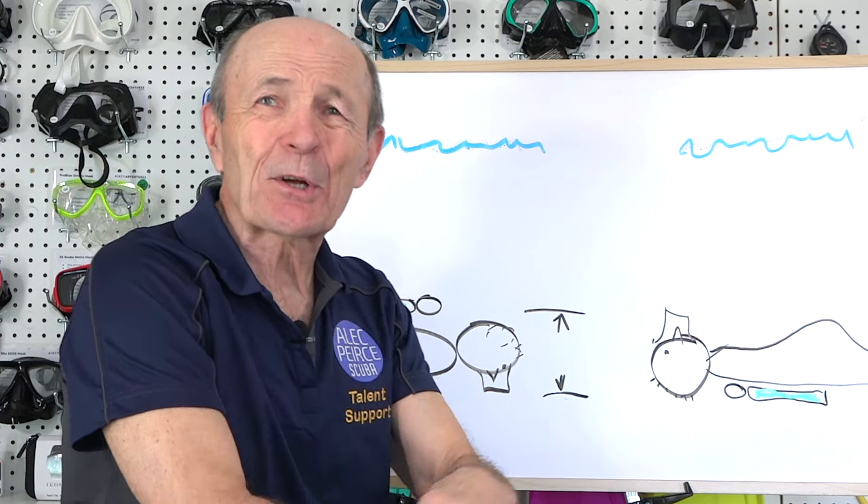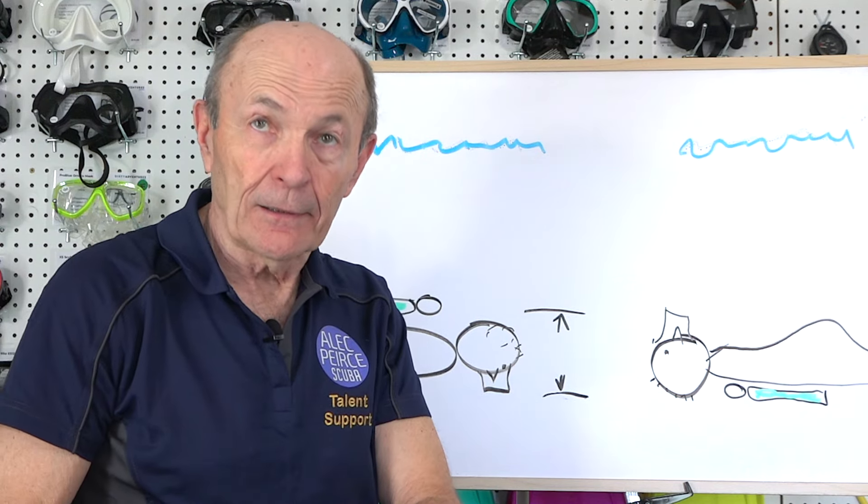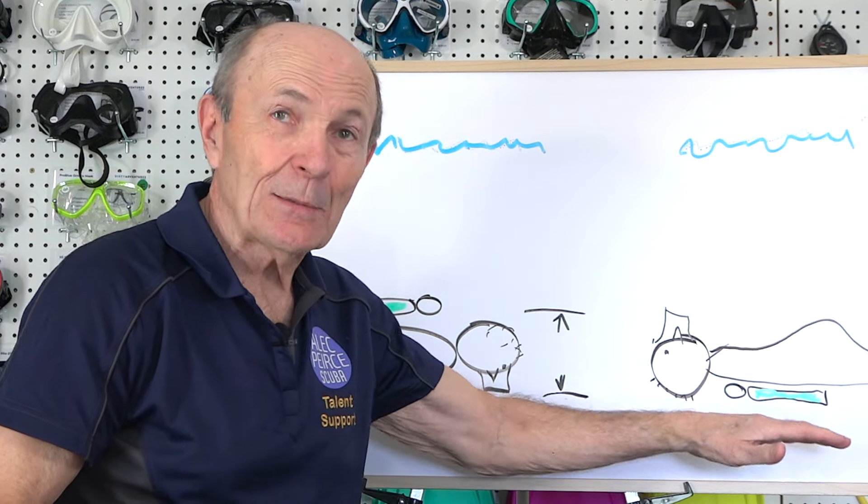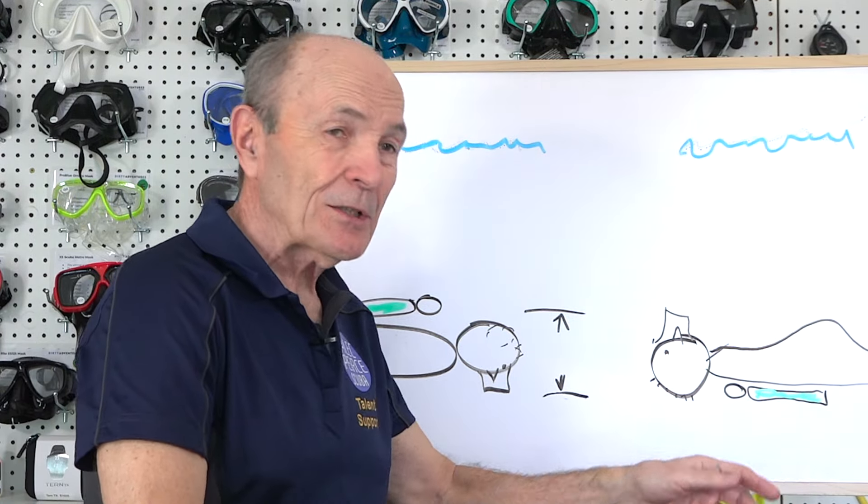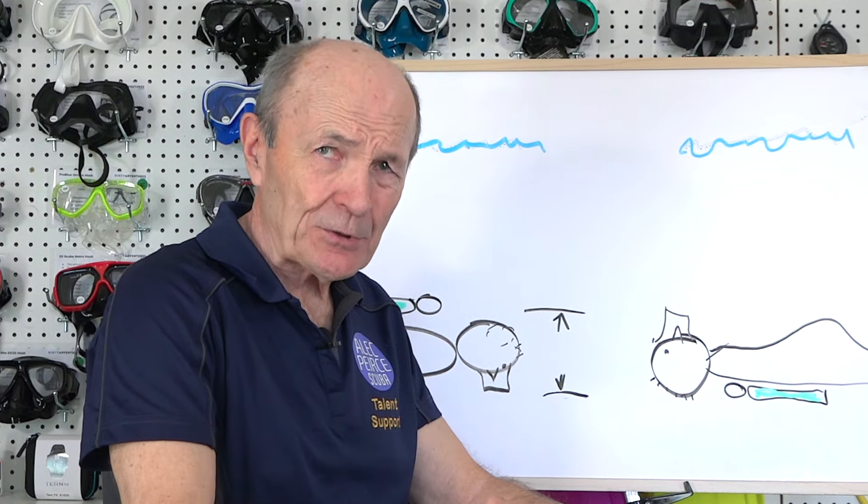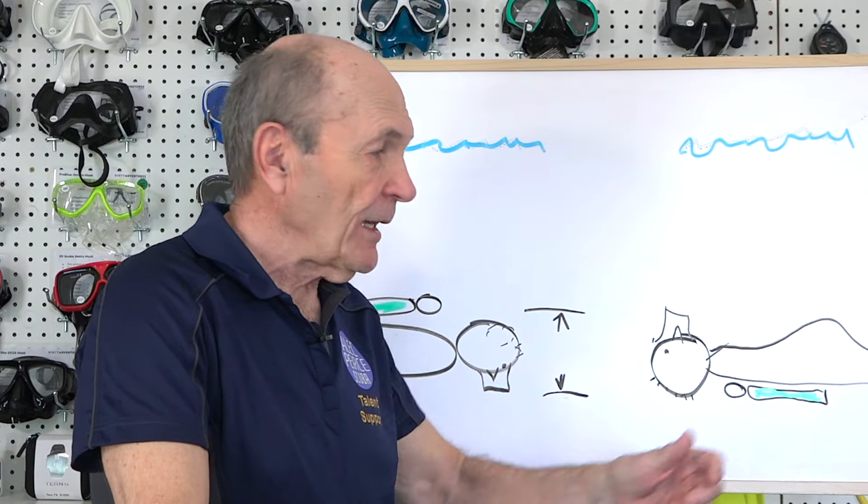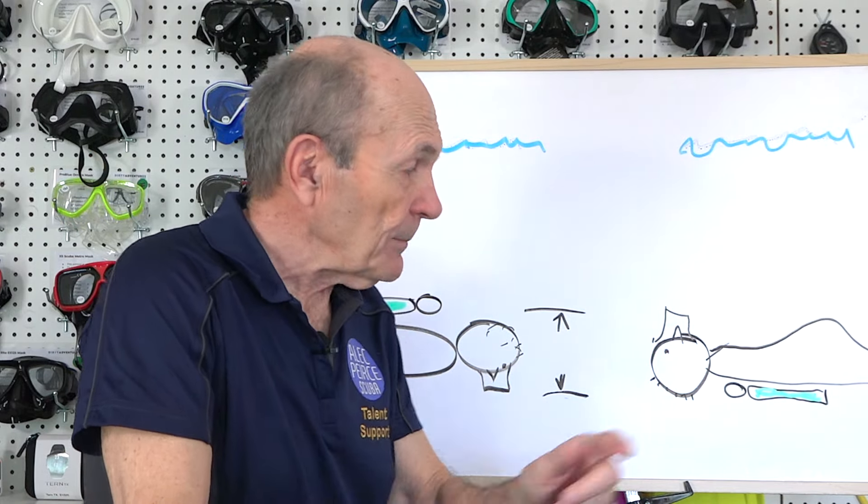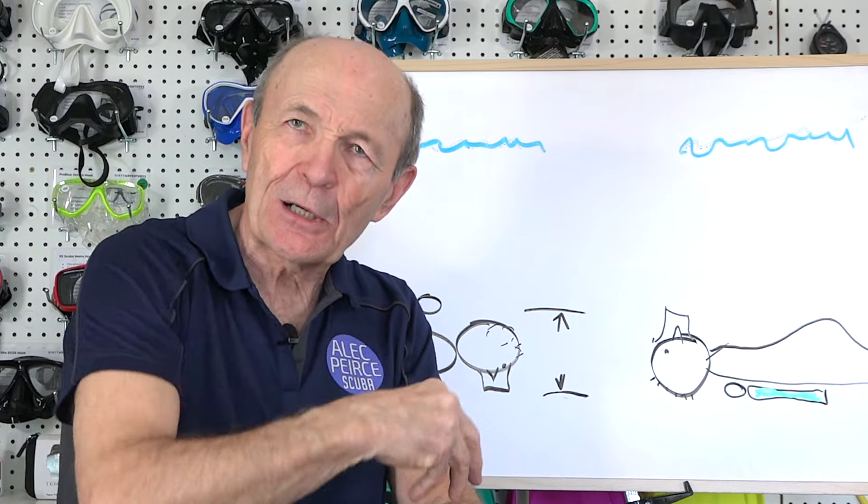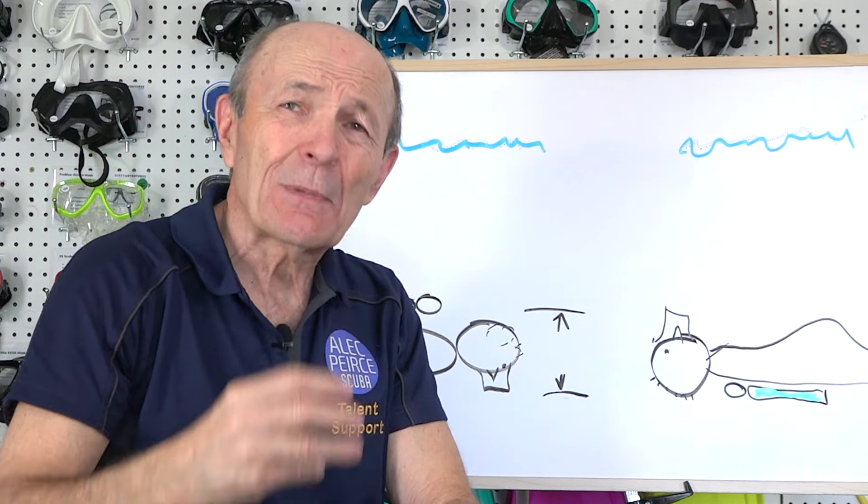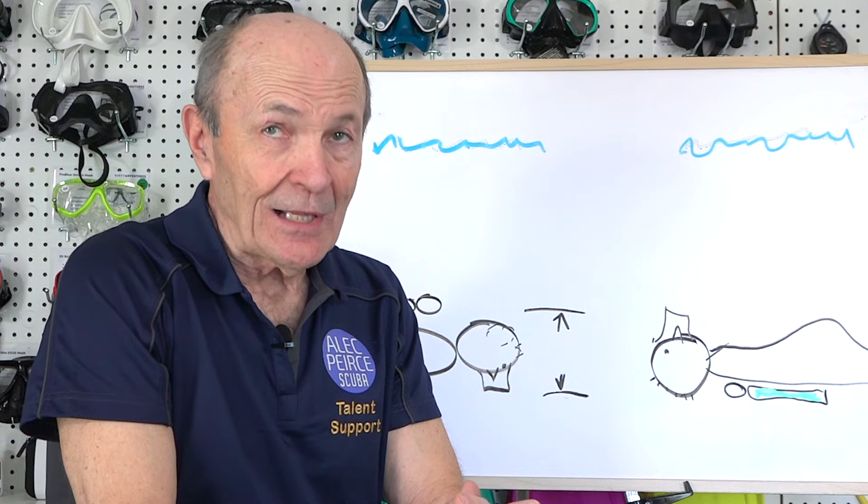So it thinks that you are deeper than you really are. It thinks you're deeper than you really are. So the regulator's down here and it is measuring the water pressure and adding that water pressure to the intermediate pressure going to you. So it's taking the 150, adding that water depth to it and delivering it to you. But you're not that deep. You're up here. So it actually is easier to breathe. The air pressure coming to you is a little bit too high. So it makes it easier for you to breathe. And that's a very simplistic explanation. But that's it.